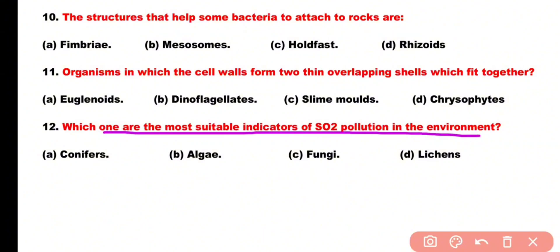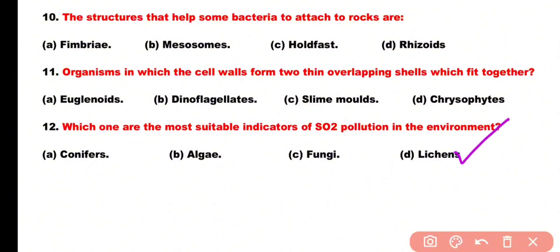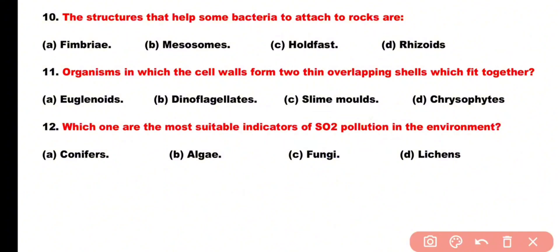Question number 12: Which one is the most suitable indicator of sulfur dioxide pollution in the environment? Options: conifers, algae, fungi, lichens. Correct answer is option D. Lichens are the best indicator for sulfur dioxide pollution within the environment.